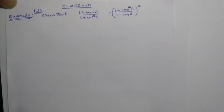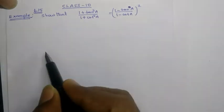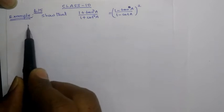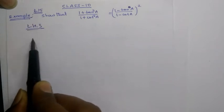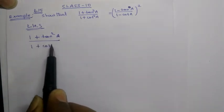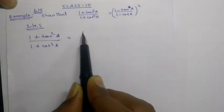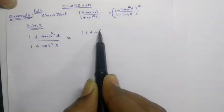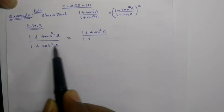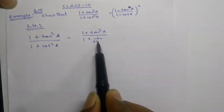So we will prove this in two cases. LHS: 1 plus tan square A divided by 1 plus cot square A. We can write cot square A as 1 divided by tan square A.